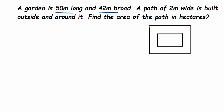The inner rectangle represents the garden — this will be 50 meters and this will be 42 meters. I'm taking this rectangle as R1. They have built a path of 2 meters wide around this garden, outside towards it. So this portion will be the path.